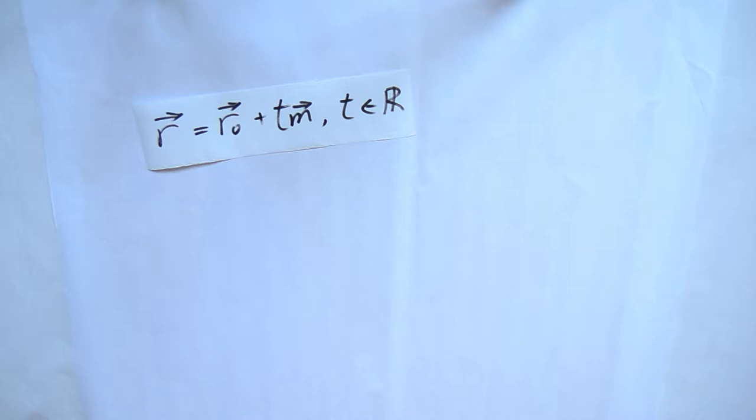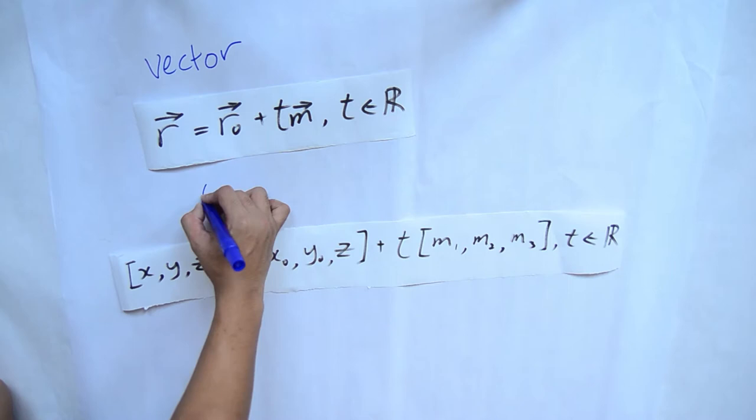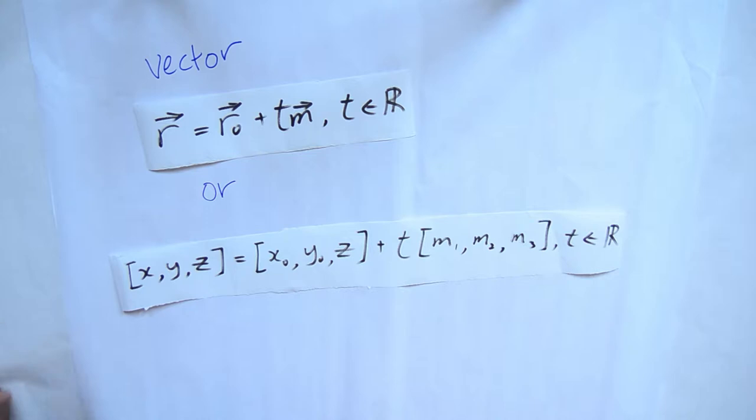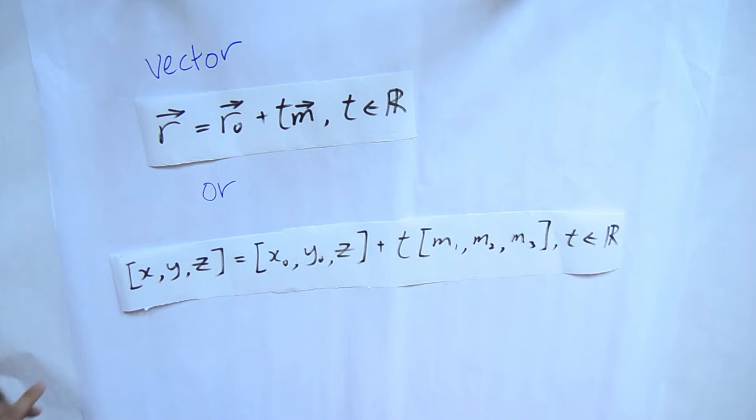The vector equation r equals r0 plus t·m can also be written as bracket x, y, z equals bracket x0, y0, z0 plus t bracket m1, m2, m3.